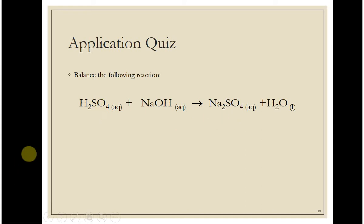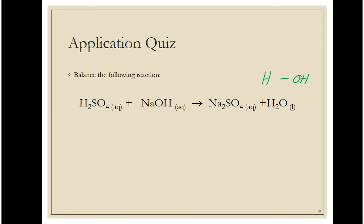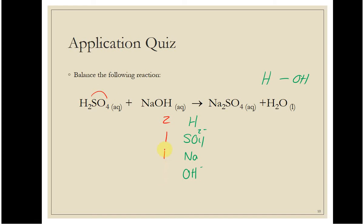See how I've got sulfate here and sulfate here? Then I've got H and OH — this is water. So I'm going to track H, then sulfate, then sodium, and then hydroxide. On this side, we have two hydrogens. This hydrogen is actually part of the hydroxide ion — it's a hydroxide, not a free hydrogen. Then we have one sulfate, one sodium, and one hydroxide.